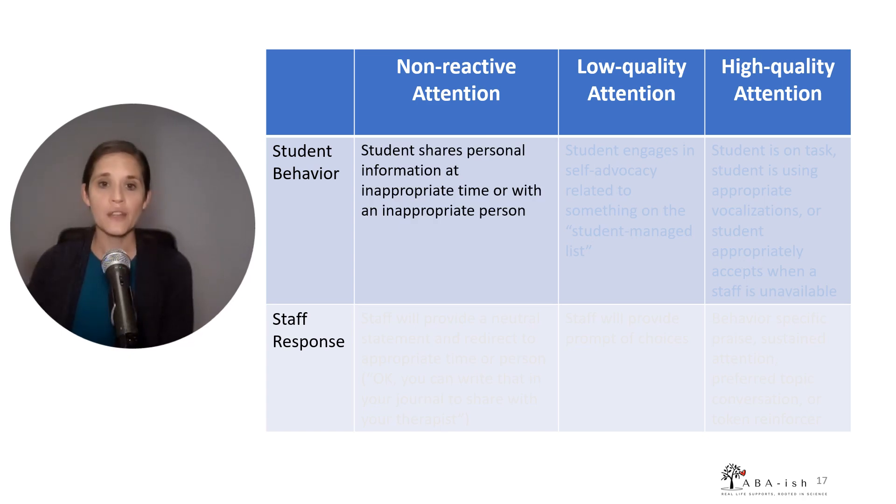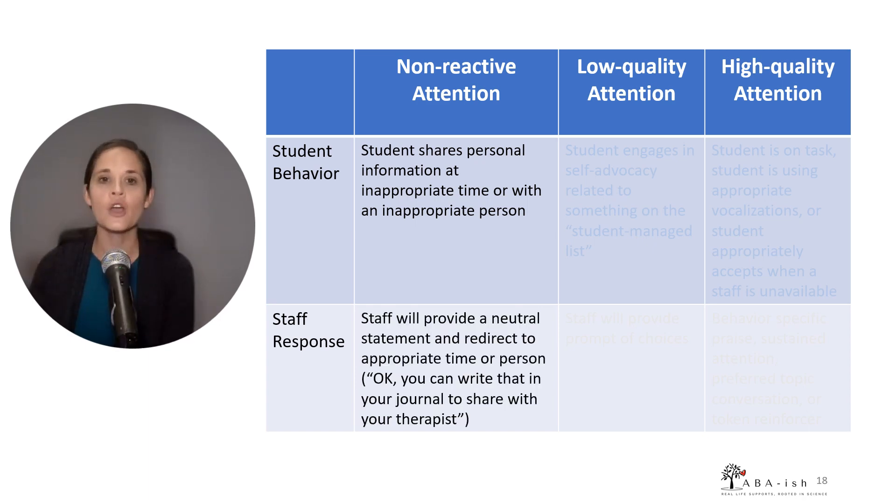So for the first part, the student engages in sharing personal information at an inappropriate time or with an inappropriate person. This had become very problematic because the student was not doing a lot of schoolwork because they were spending so much time trying to talk during class. And it was also problematic because they were sharing personal information in a way that represented a safety concern. So because this is such an inappropriate behavior and it's becoming dangerous to the individual, we really want to do our best that we can to reduce it. However, giving straight extinction, meaning completely ignoring and giving no attention to this behavior, was not functional because the student would continue to escalate and escalate until it became so disruptive that staff would have low integrity and respond. So instead, we told staff that when the student shares that personal information at an inappropriate time or with an inappropriate person, we want them to provide a neutral statement and redirect to the appropriate time or person. So they would say something like, okay, you can write that in your journal to share with your therapist. This worked very well because it did not provide a lot of attention to the inappropriate behavior. It provided very little, but it was sufficient to stop the student from spiraling.